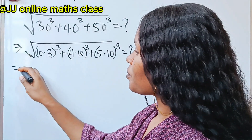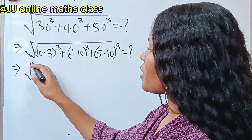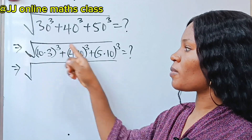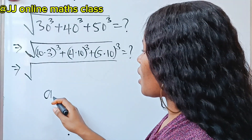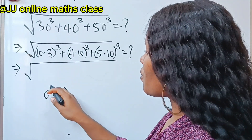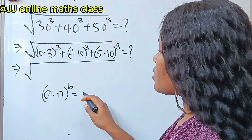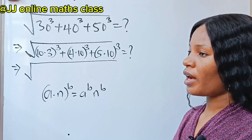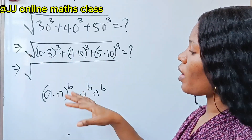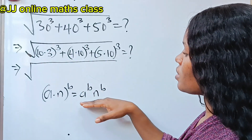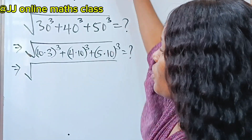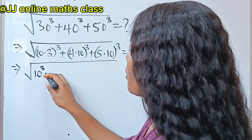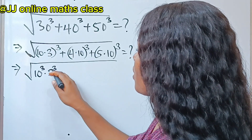Now we factorize, but before that let's open these brackets according to the law of indices: a multiplied by n raised to the power of b is equal to a to the power of b, multiplied by n to the power of b. So we are going to express this in that form. If we do that, then we have 10 to the power of 3 multiplied by 3 to the power of 3.